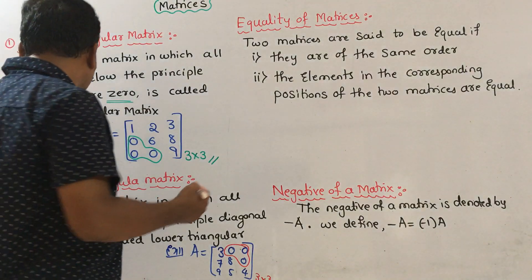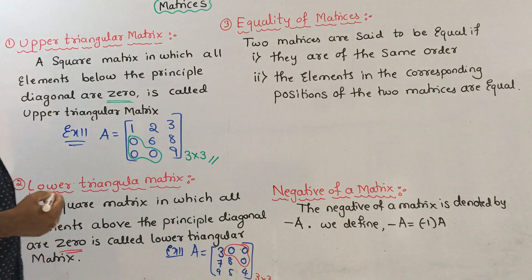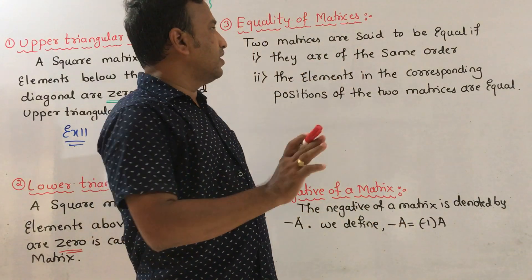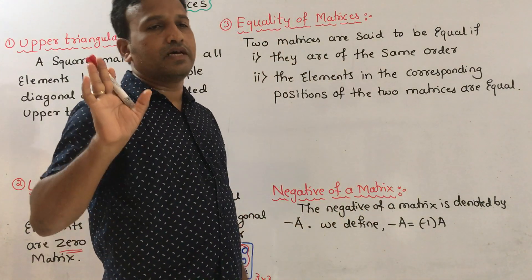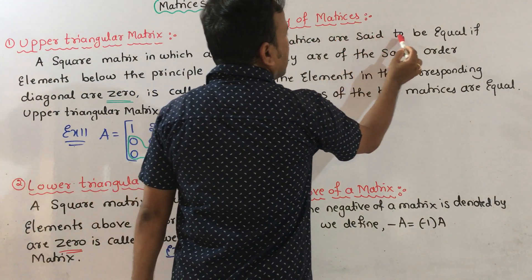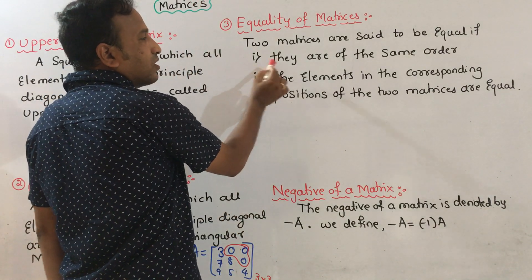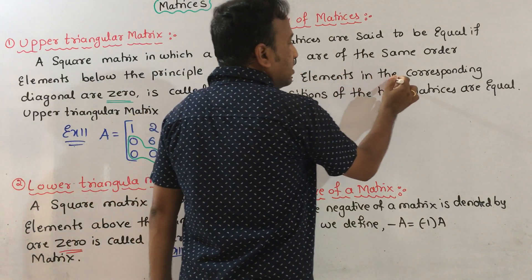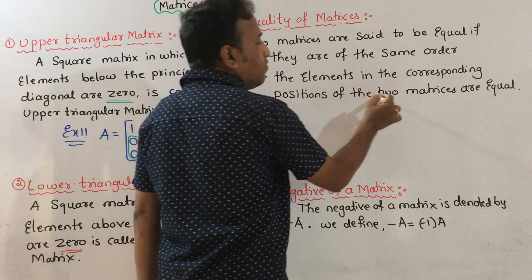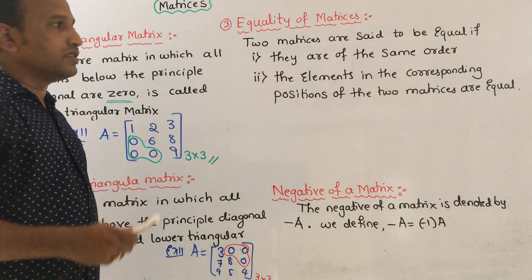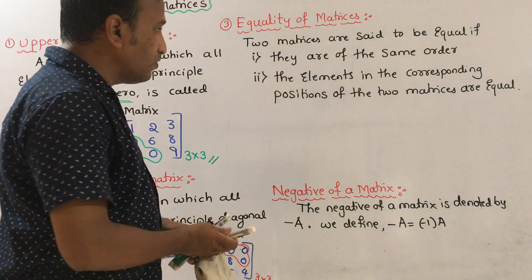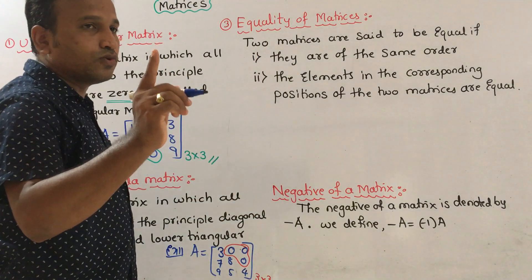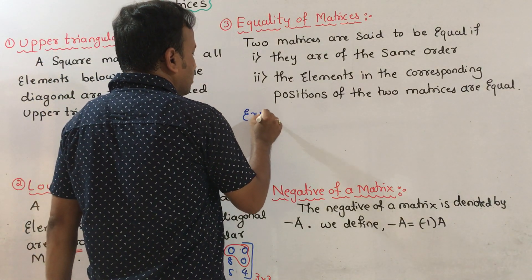Third definition: equality of matrices. Two matrices are said to be equal if, first, they are of the same order, and second, the elements in the corresponding positions of the two matrices are equal. For example, let's look at two matrices.